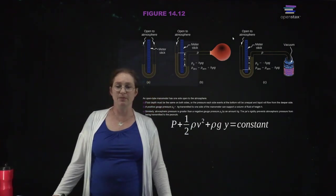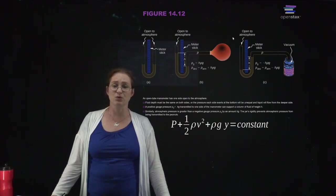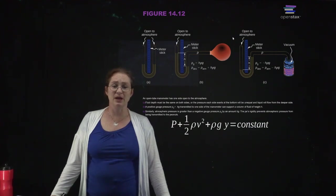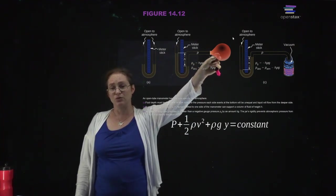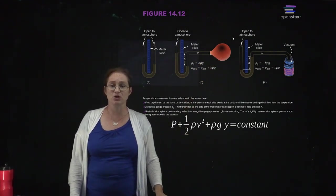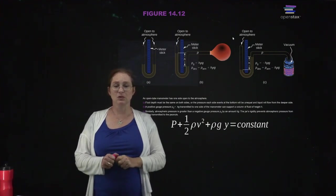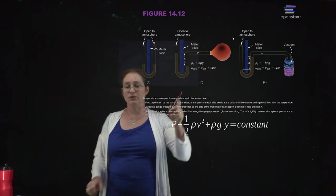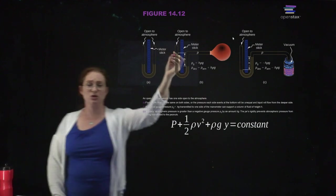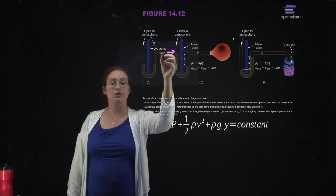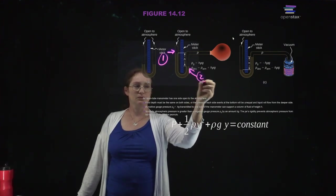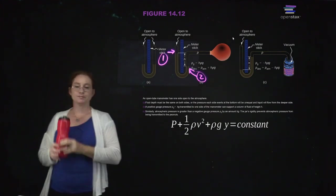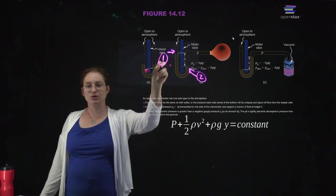An open-tube manometer has one side open to the atmosphere. The fluid depth will be the same on both sides, or else there will be a pressure difference that equalizes them. You can use Bernoulli's equation comparing side one and side two. We want to measure the difference in pressure, and side two is connected to whatever system we're measuring.